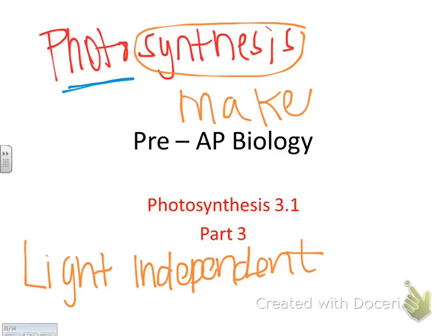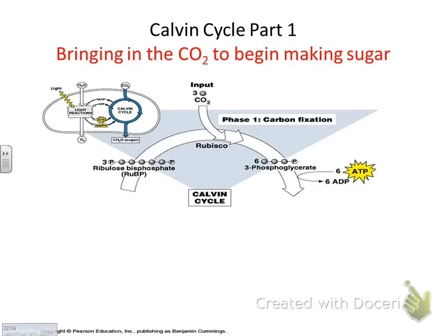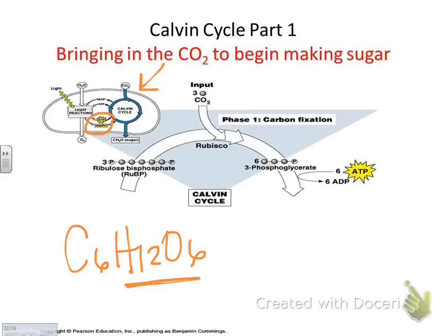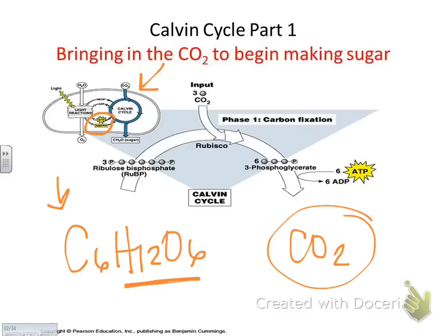So the Calvin Cycle — I'm going to show you the textbook pictures first and then we're going to draw it a little more simple. This step uses the ATP and the NADPH created in the light reaction to make sugar. Sugar is C6H12O6. The H12O6 is water, but we need carbon, which is why plants take in CO2. For the Calvin Cycle, plants need CO2, ATP, and NADPH.